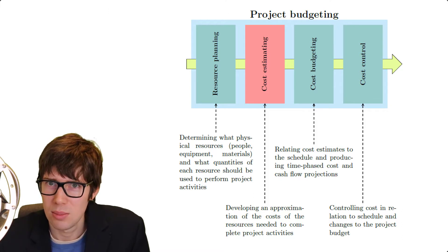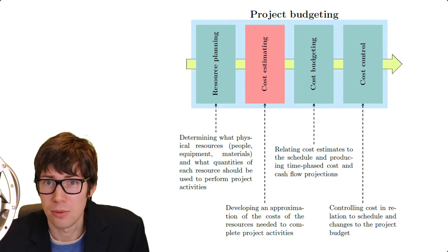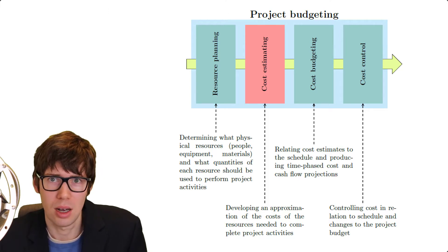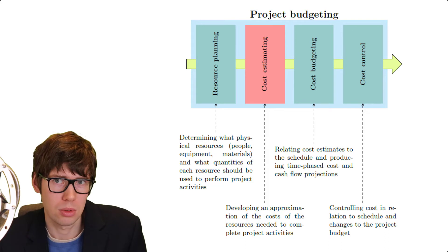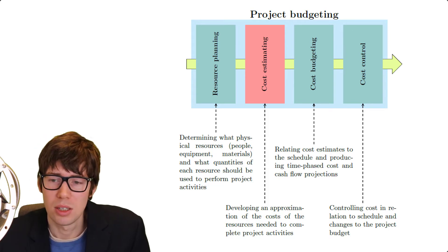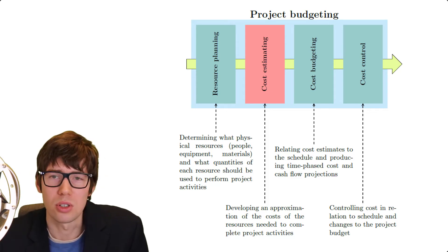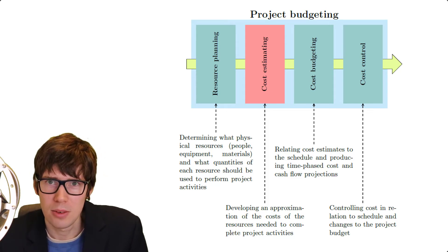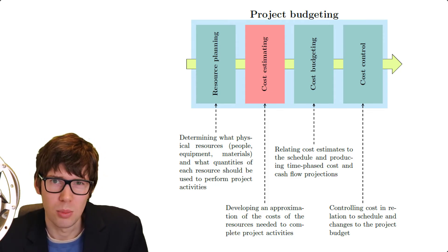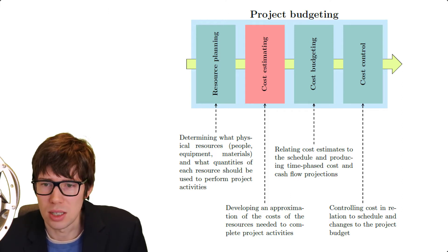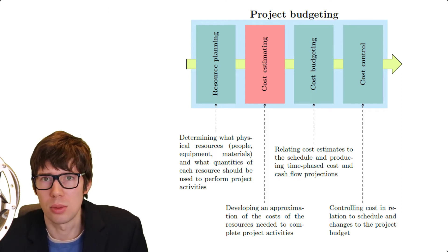Now these names are a bit confusing, admittedly. As already noted, cost estimation and project budgeting get confused quite a lot. But as you can see, the third phase is called cost budgeting, which also very easily gets confused with project budgeting. So we need to talk in a bit more detail about these four different phases or sub-processes of the project budgeting process.